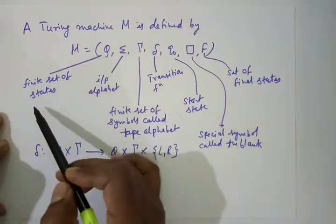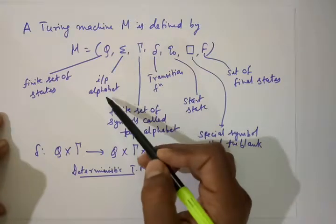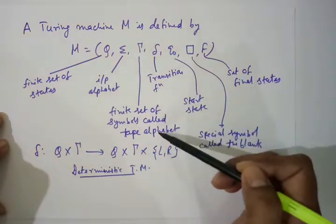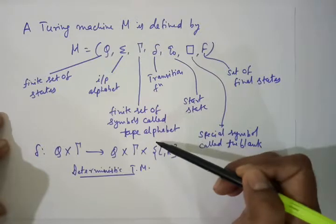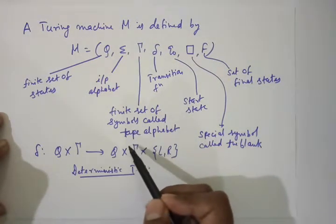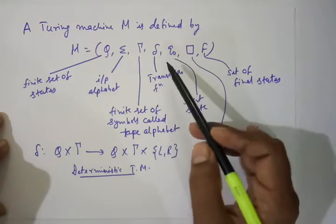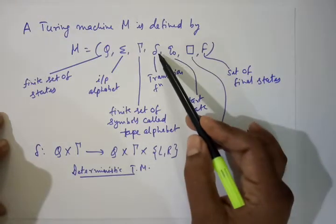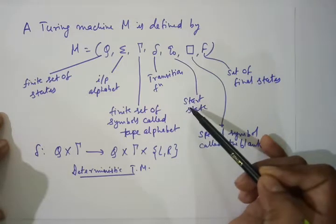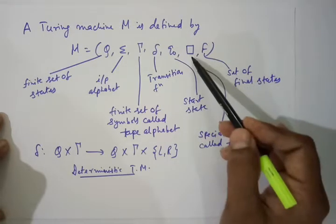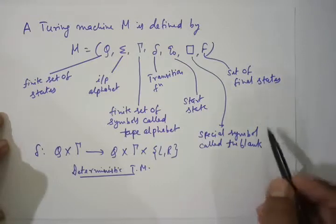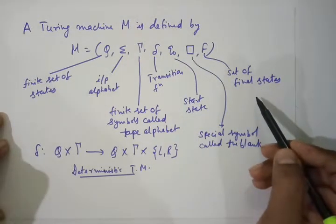Q is our finite set of states. Σ is our input alphabet. Γ is our finite set of symbols called the tape alphabet. δ is our transition function. Q0 is our start state. The square symbol □ is a special symbol called the blank. And F is our set of final states.